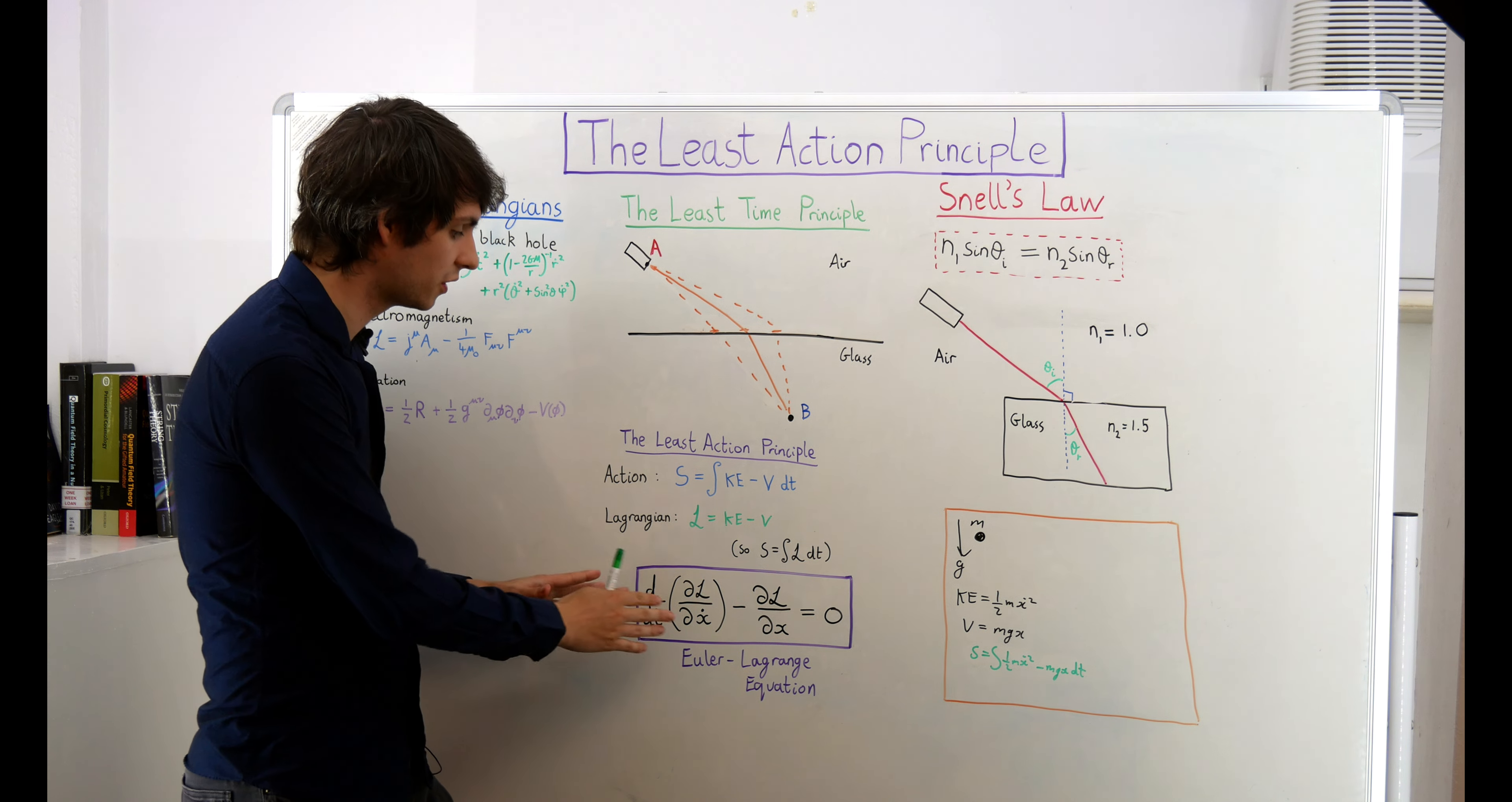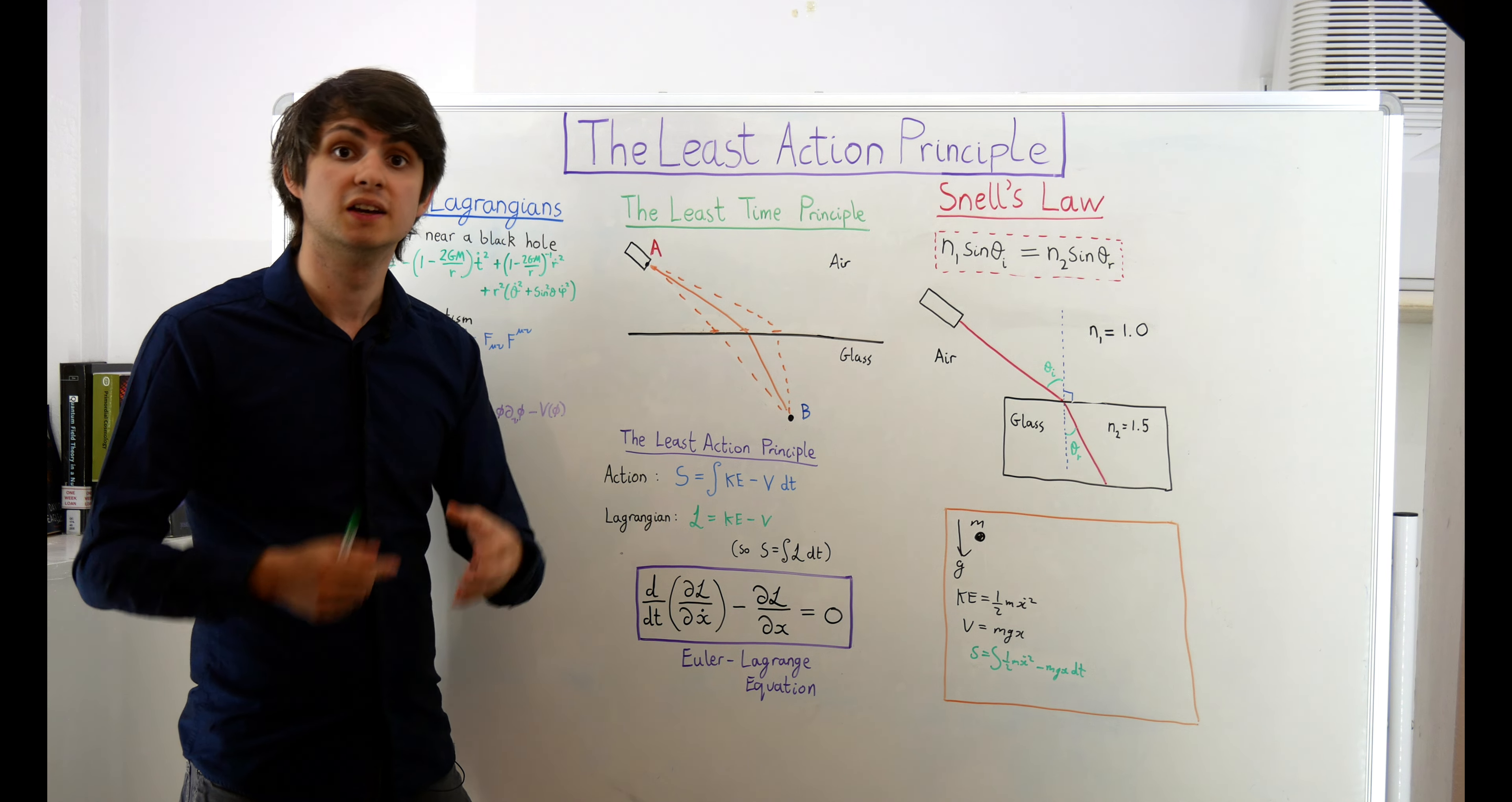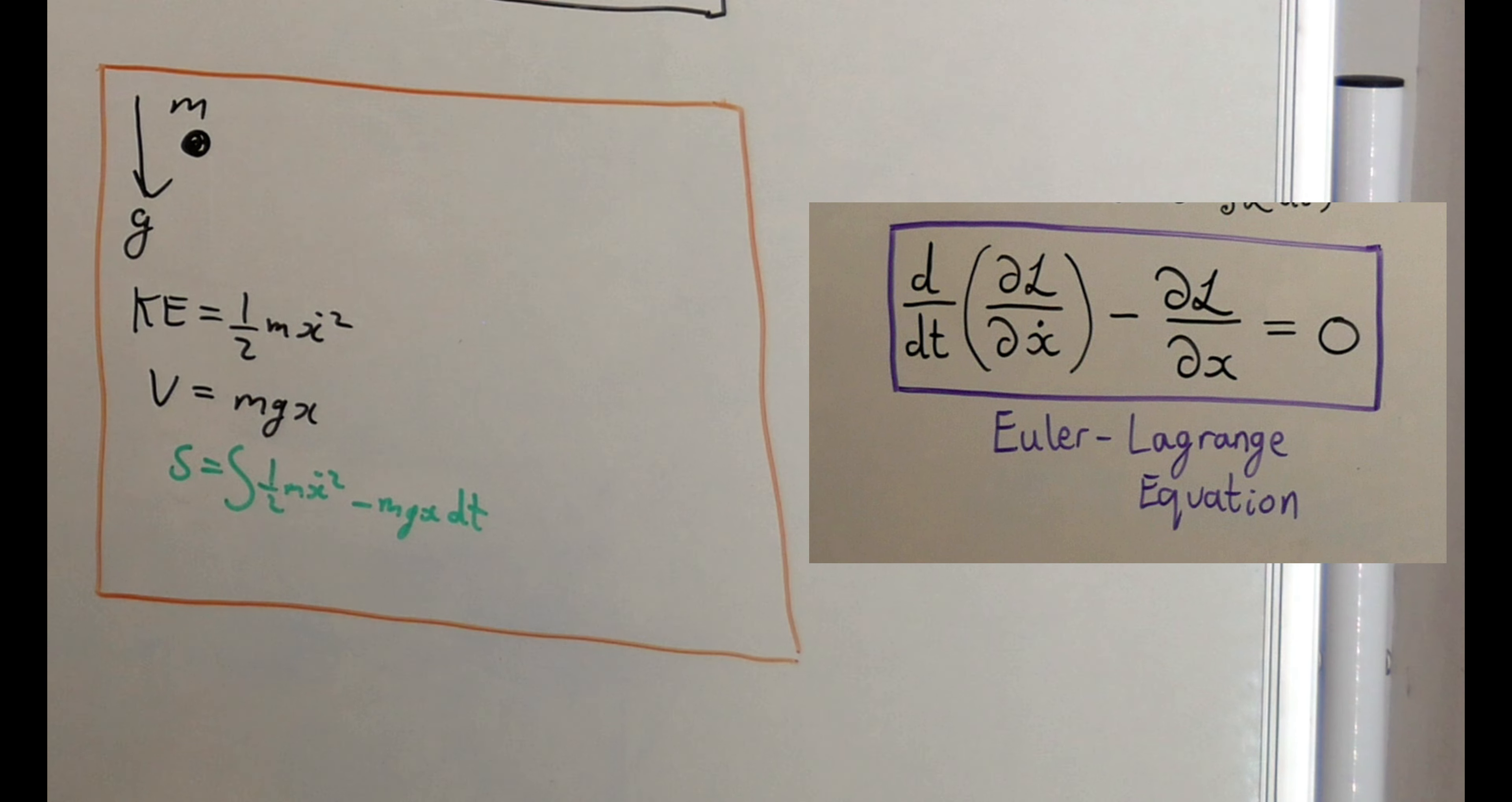Now, I don't want to go into the details of how this equation is actually derived. All we need to know for now is that if the least action principle is the case, then physical systems will obey the Euler-Lagrange equation. So for our system, which is a single particle in a gravitational field, what do the Euler-Lagrange equations look like?